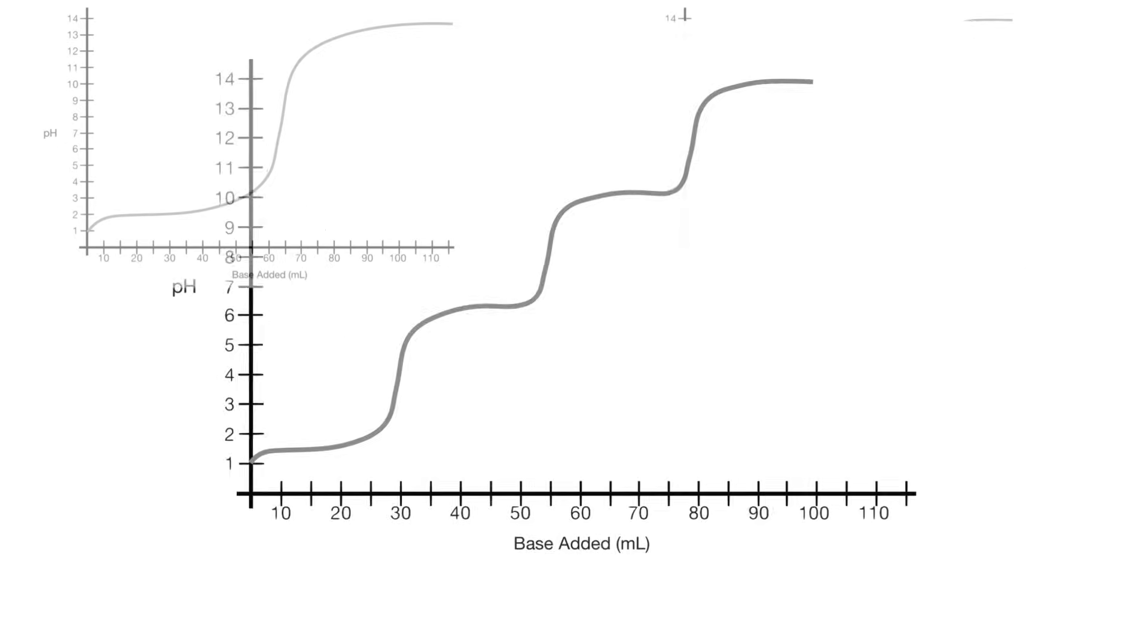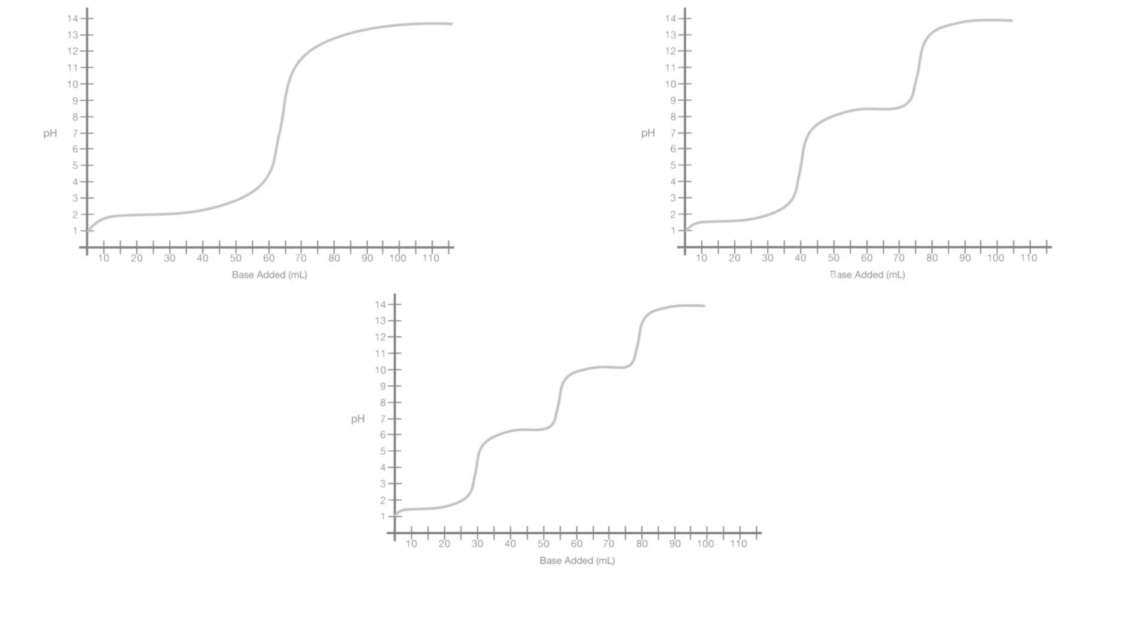So, to figure out whether an acid is mono, di, or triprotic when looking at different titration curves, simply count the number of equivalence points.